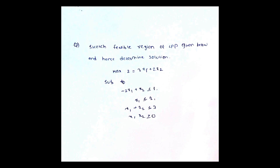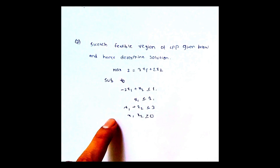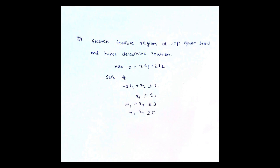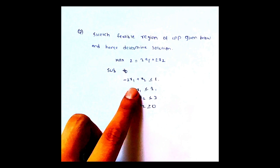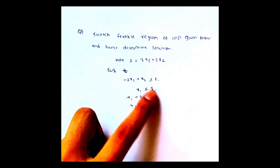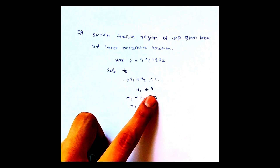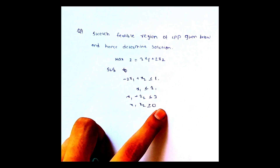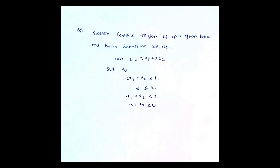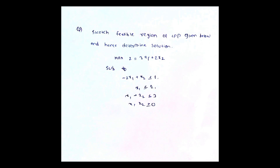Now I am giving you a practice problem. Sketch the feasible region of the LPP given below and hence determine the optimum solution. Maximize Z equals 3x1 plus 2x2, subject to: minus 2x1 plus x2 less than or equal to 1; x1 less than or equal to 2; x1 plus x2 less than or equal to 3; and x1, x2 greater than or equal to 0. Solve this and comment the optimum solution in the comments.